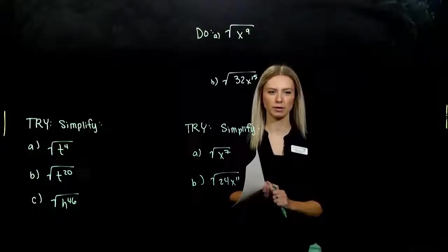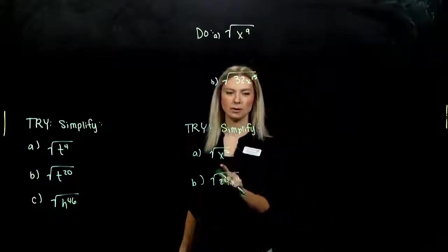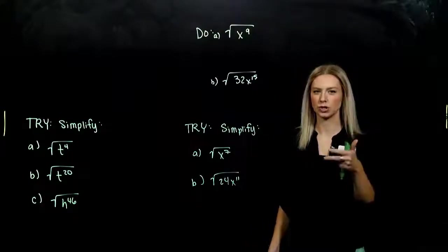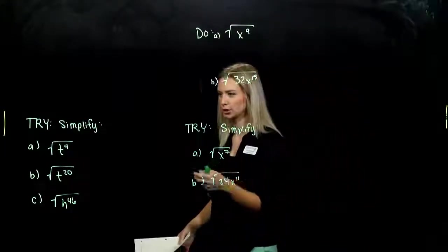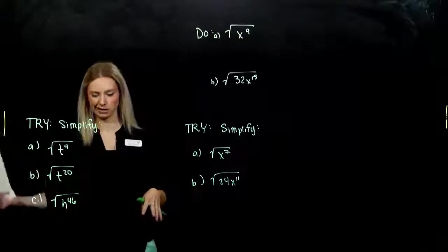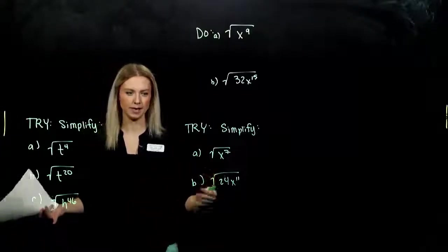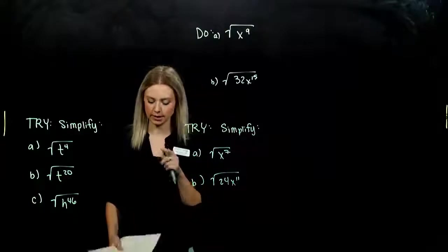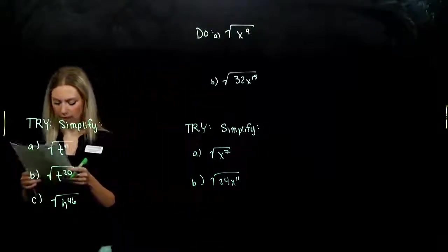When looking at radical expressions so far, the powers on our variables have either been 1 or 2, and we need to look a little bit larger. When dividing with these powers, we have even and odd numbers, and they behave differently inside of the radicals. We're going to take a look at even powers first.